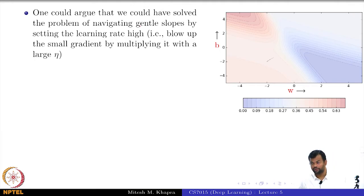One could have argued that we could have solved this problem of slow movement on the gentle slope by increasing the learning rate. Remember that we have this eta and we deliberately chose to be conservative, but what if I just blew up the eta? What would happen? It will overshoot, right.